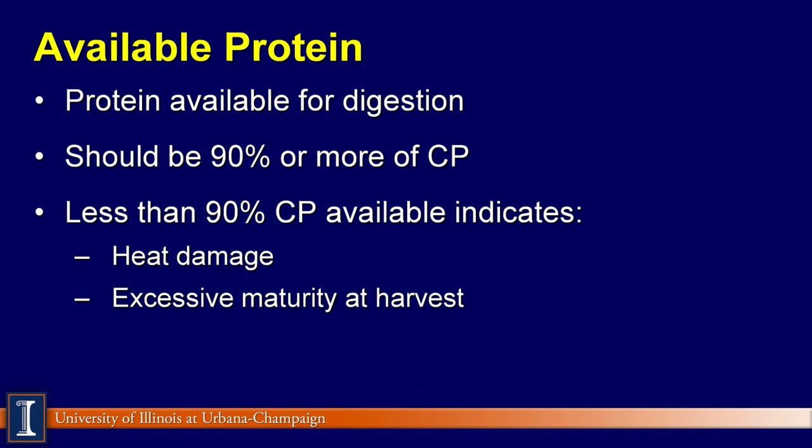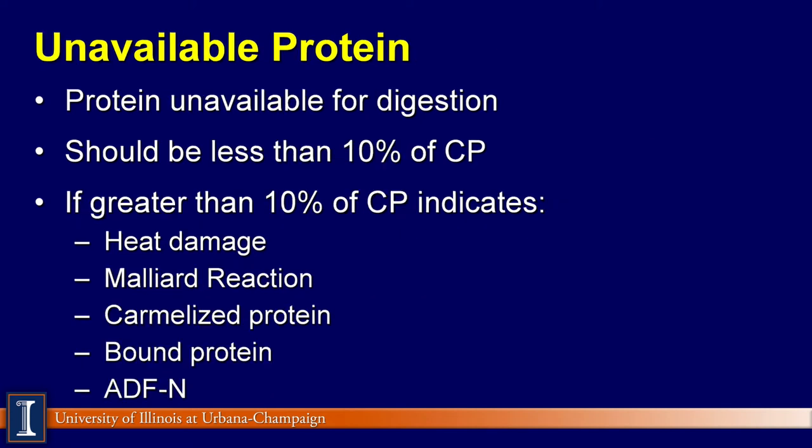If available crude protein is less than 90%, this can indicate that the forage has been heat damaged, that the forage was too mature when harvested, or that there is a high concentration of grass in the forage. Unavailable crude protein is crude protein that is not available for digestion and should be less than 10% of the total crude protein. The unavailable fraction represents protein that is bound to the fiber and cannot be digested.